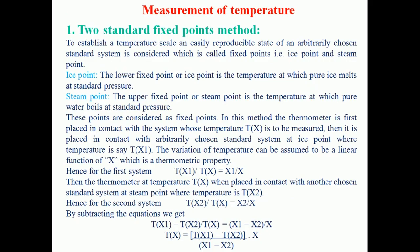For measuring temperature there are two methods: the two standard fixed point method and the single standard fixed point method. In the two standard fixed point method, an easily reproducible state of an arbitrarily chosen standard system is used as fixed points. The two standard points are the ice point and the steam point. The ice point (lower fixed point) is the temperature at which pure ice melts at standard pressure. The steam point (upper fixed point) is the temperature at which pure water boils at standard pressure.